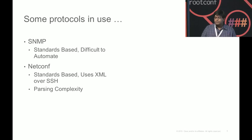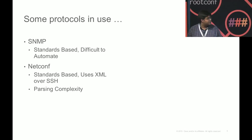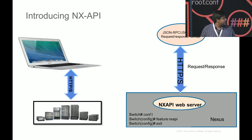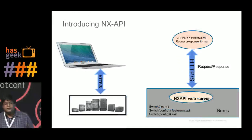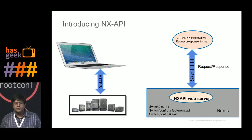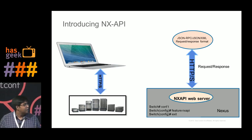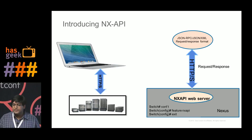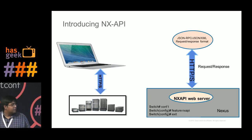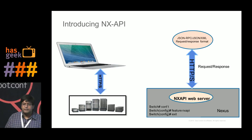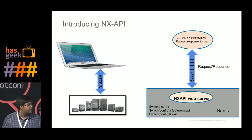This is where NX API comes in. This is on the Nexus switches. What it simply is, is a REST-like interface using HTTP or HTTPS. You have an NGINX server running on the switch, JSON RPC as the RPC mechanism, and JSON or XML as the data interchange format. Using JSON ensures that you have much easier parsing available to you.